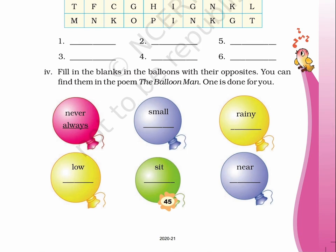Question 4: Fill in the blanks in the balloons with their opposites. You can find them in the poem, The Balloon Man. One is done for you. Never — Always. Small — dash. Rainy — dash. Low — dash. Sit — dash. Near — dash.